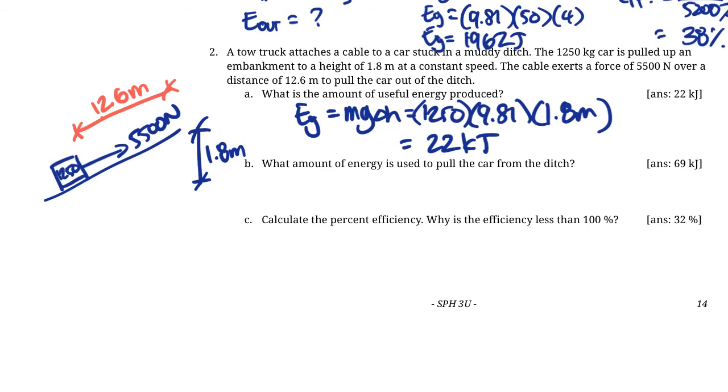What amount of energy is actually used to pull the car from the ditch? This is more referring to work, like how much energy was actually expended pulling this thing 12.6 meters. Work is just force times distance. The force was 5500 newtons times 12.6 meters. That calculation gives us 69 kilojoules.